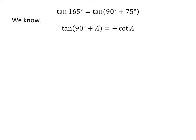We know the trigonometry identity tangent of 90 degrees plus A is equal to minus cotangent of A. The proof of this trigonometry identity is given in the video appearing in the upper right corner, and the link is also given in the description section.